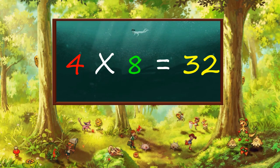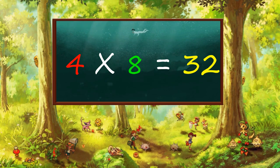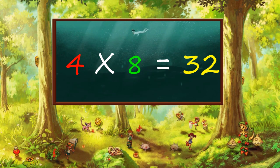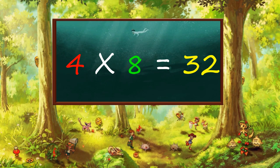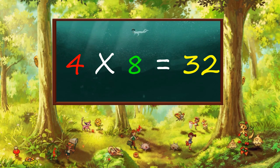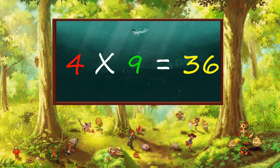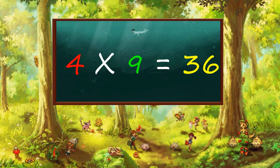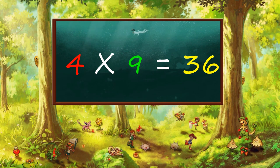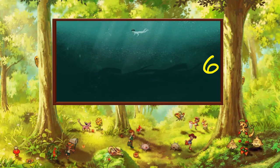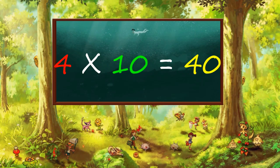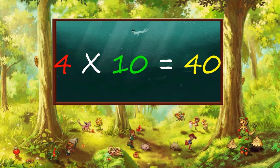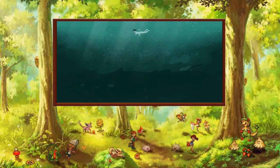Four, eight's a thirty-two. Four, eight's a thirty-two. Four, nine's a thirty-six. Four, nine's a thirty-six. Four, ten's a forty. Four, ten's a forty.